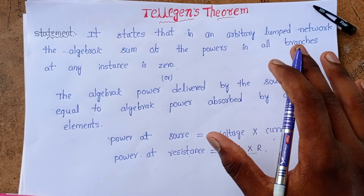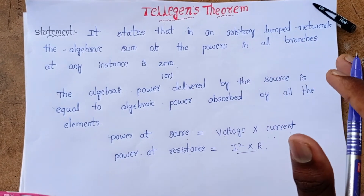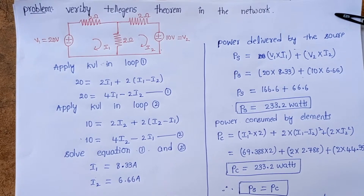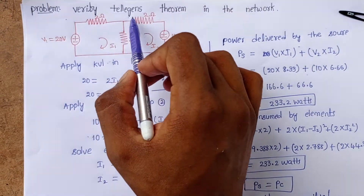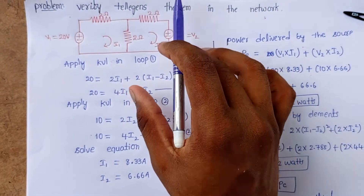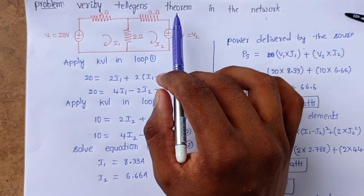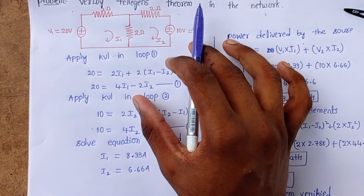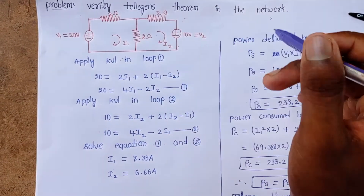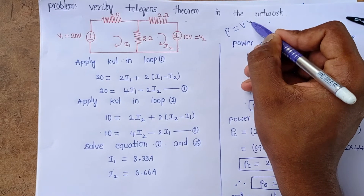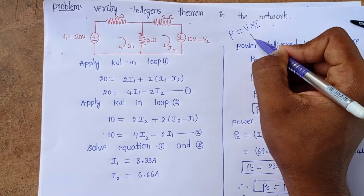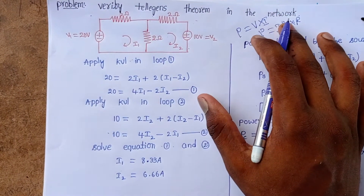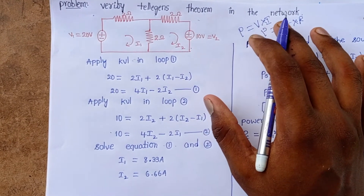Now let's see one example problem on Tellegen's theorem. The problem is to verify Tellegen's theorem in the given network. Tellegen's theorem requires that power delivered by the source equals power absorbed by the elements. The power formula at a source is P = V × I, and at resistance it is P = I² × R.